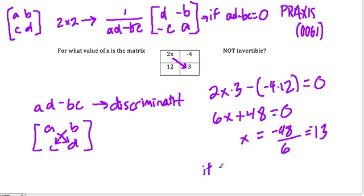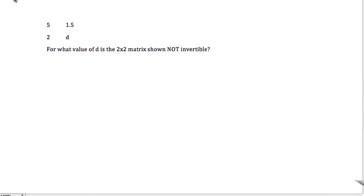So if x equals negative 13, then it is not invertible because A times D minus BC would be 0, and that would be undefined.